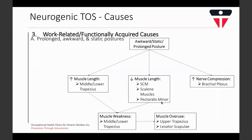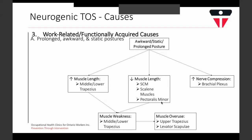One of the main components of functionally acquired causes involves prolonged or static awkward postures, such as constantly working with elevated arms or seated and standing postures which promote a rounded upper back and forward head posture. These postures can lead to muscle imbalance, which can in turn influence compression within the thoracic outlet. The muscular adaptations that occur can affect lengthening and shortening of particular muscle groups, leading to muscle weaknesses requiring overuse of other muscles to compensate.